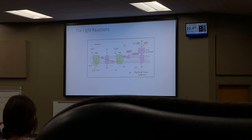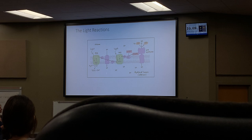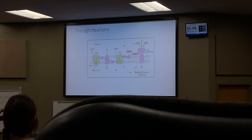Meanwhile, protons are being pumped — similar to the electron transport chain in cellular respiration. This is the first electron transport chain, where protons are being pumped into the thylakoid lumen. Inside the thylakoid membrane — think of being inside the coin — that's where those protons are going to be generated.